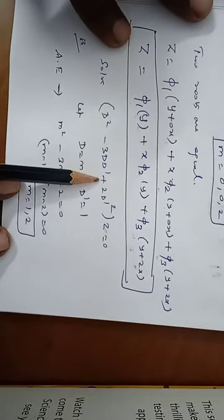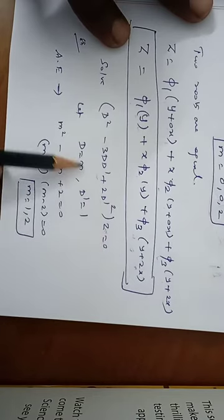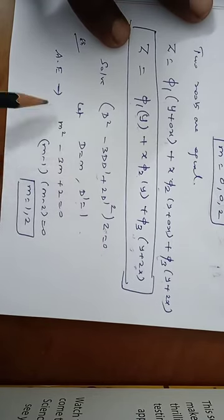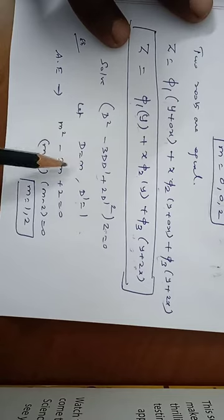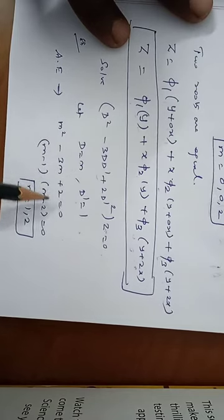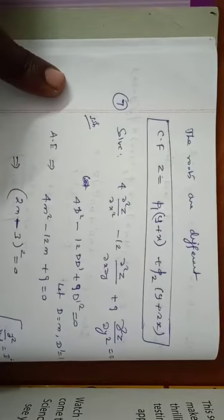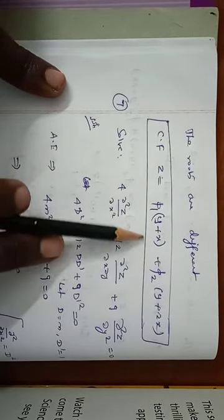Problem 6: Solve D² - 3DD' + 2D'²z = 0. Let D = m, D' = 1. The auxiliary equation is m² - 3m + 2 = 0, which factors as (m - 1)(m - 2) = 0, giving m = 1, 2. The roots are different, so z = φ₁(y + x) + φ₂(y + 2x).